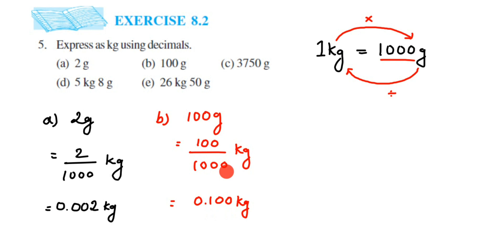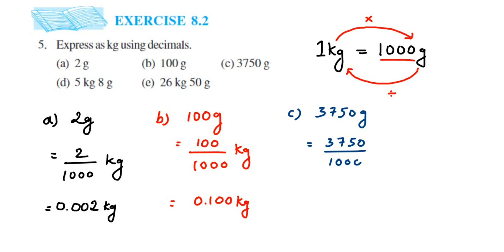The next question: 3750 grams. So this equals 3750 divided by 1000 kilograms. Moving the decimal three places from the right of 3750 gives us 3.750 kilograms.